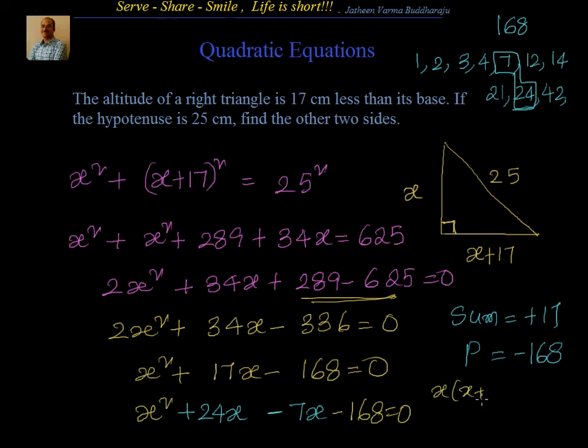That gives x equal to 7 or x equal to minus 24. x cannot be negative, therefore x is equal to 7. If x equals 7, then altitude is 7 and the base is 24.